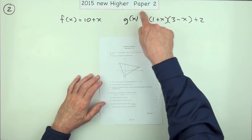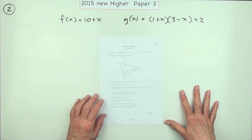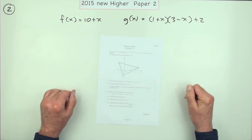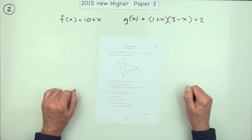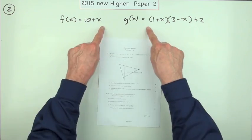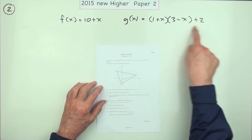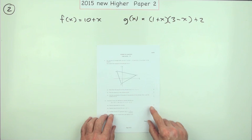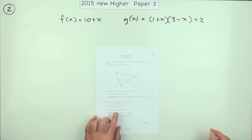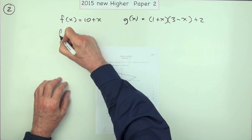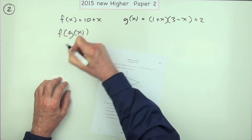Question two from Paper 2 of the 2015 New Higher. Functions of functions, composition of functions, seven marks. They look nice and straightforward, no fractions. This one's a little bit higgledy-piggledy but never mind, it's not a fraction. For the first two marks, find an expression for f of g of x, part a.